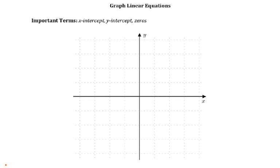So graphing linear equations. The important terms you're going to use are the x-intercept, the y-intercept, and the zeros. Drop a coordinate at zero two and then maybe drop another one at four zero. Get a ruler out.